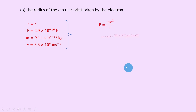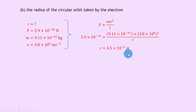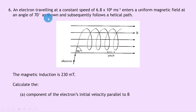Writing down f equals mv squared over r and substituting: 2.9e-16 equals 9.11e-31 times (3.8e6) squared divided by r. Cross-multiplying to isolate r and remembering to square the velocity term gives r equals 4.5 times 10 to the minus 2 meters, or 45 millimeters.